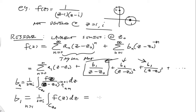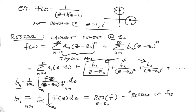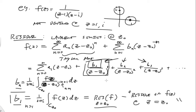This coefficient B1 has a name — it's called the residue of F at Z equals Z-naught. We write it as the residue of F of Z at Z equals Z-naught. That symbol corresponds to this coefficient B1 — the coefficient on the term with the first power singularity, i.e., the (Z minus Z-naught) to the negative one term.